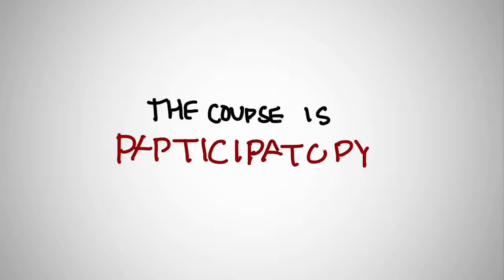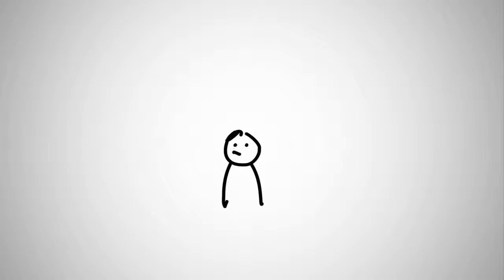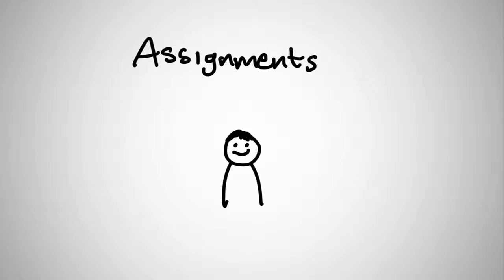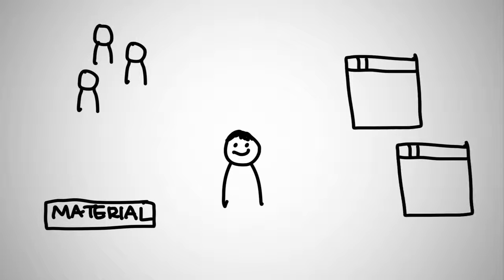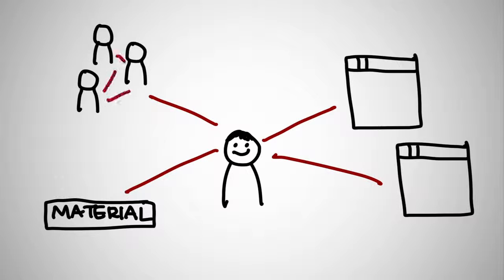The course is participatory. You really become part of the course by engaging with other people's work. Participants are not asked to complete specific assignments, but rather to engage with the material, with each other, and with other material they may find on the web. You make connections between ideas and between you and other people — you network. One of the outcomes people get from the course are the network connections they build up through engaging with each other.